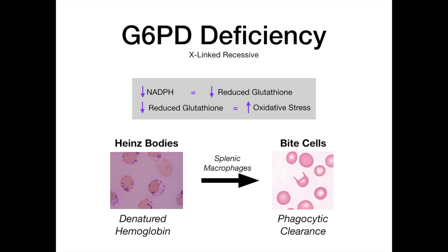If on your exam you see a vignette where someone eats a fava bean and shows a clinical picture of severe hemolysis, that's your answer. If someone started an antibiotic like nitrofurantoin or a sulfa drug and develops anemia, that's your answer. It's especially high yield because instead of describing the scenario, they could show you Heinz bodies or bite cells and expect you to know the pathophysiology of G6PD deficiency.